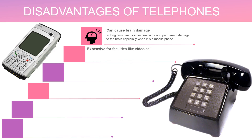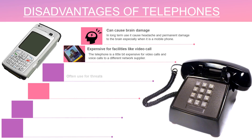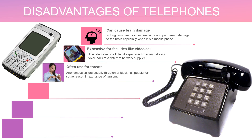Another disadvantage is that some phone facilities are very expensive — for example, video calls, and calling from one network to the next or from a landline to another network supplier becomes very, very expensive. Also, people use phones to threaten and blackmail others. The government has tried to force everyone to register their numbers with network suppliers, but people still use phones to threaten and blackmail others for ransom.